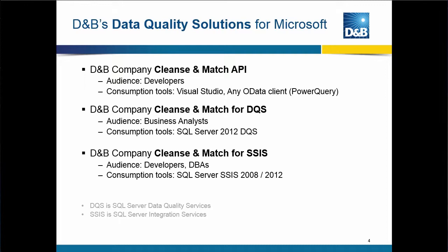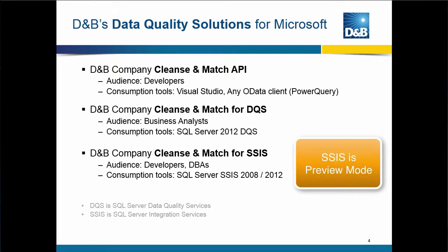Let's see what solutions they have to pick from given that they're a Microsoft shop. There are three. The first one exposes an API or an endpoint that developers can program against using the .NET framework in Visual Studio, or any sort of OData kind of solution, even including the new Power Query and Power BI. The second one is an endpoint specifically created to work with SQL Server 2012 Data Quality Services — that's more of an analyst or DBA type solution. The one they chose, and that we're going to focus on, is the cleanse match exposed through SQL Server 2012 Integration Services, as a component that can be made part of a data flow for either a one-time or a reoccurring package or set of packages.